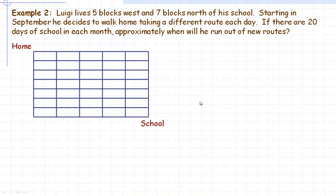One more example. Luigi lives 5 blocks west and 7 blocks north of his school. So these are all the blocks to get from home to his school. It says starting in September, he decides to walk home taking a different route each day. One thing I'll say to Luigi is good luck keeping track of all these. If there are 20 days of school in each month, and 10 months in a school year, approximately when will he run out of new routes?